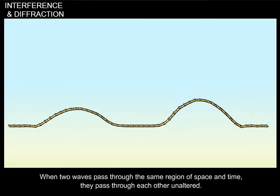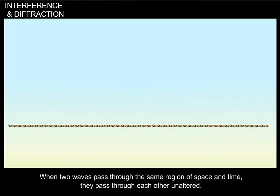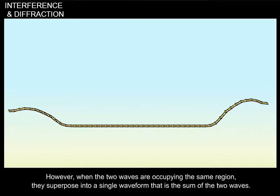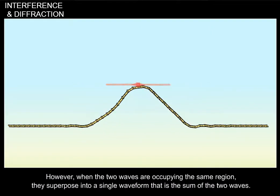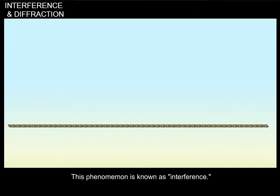When two waves pass through the same region of space and time, they pass through each other unaltered. When the two waves are occupying the same region, they superpose into a single waveform that is the sum of the two waves. This phenomenon is known as interference.